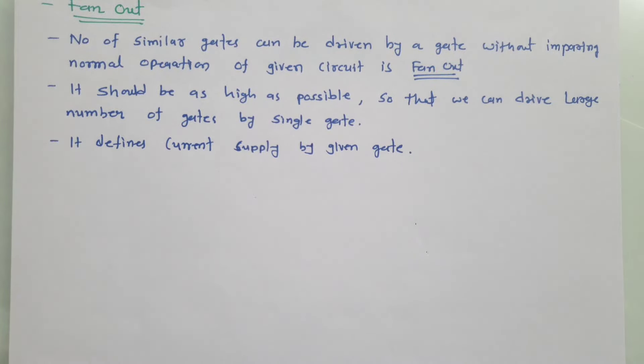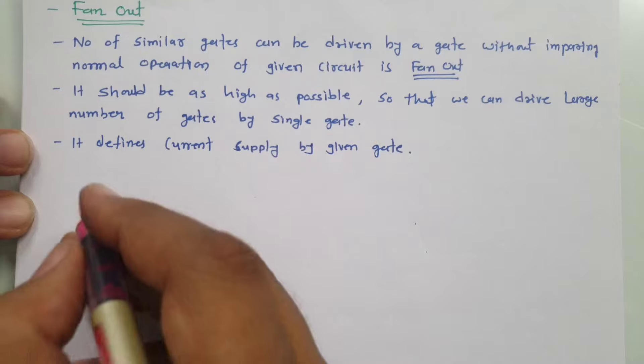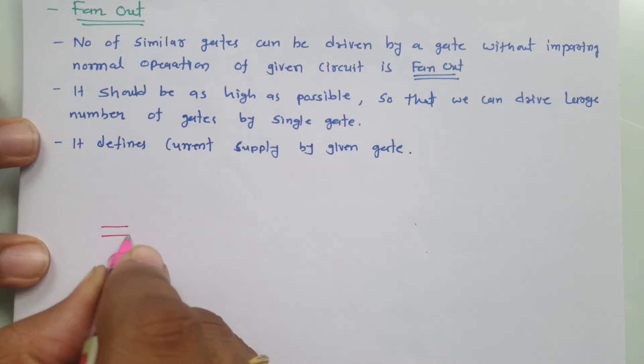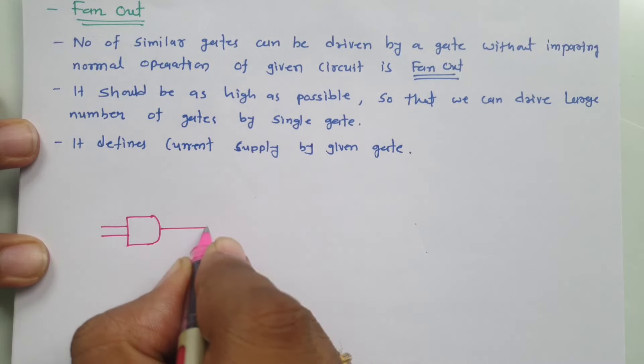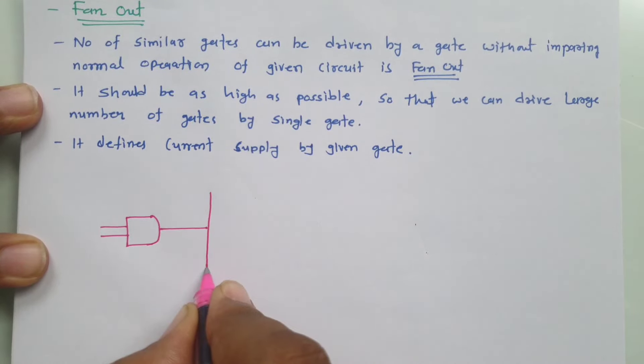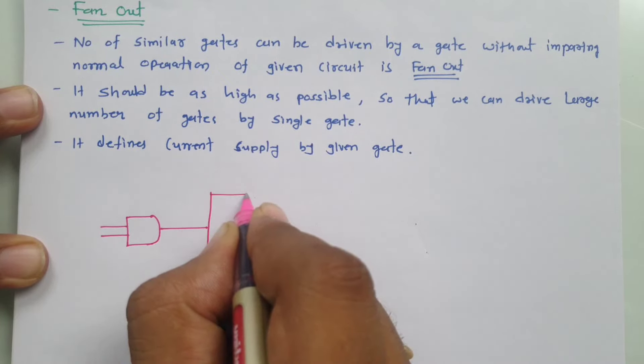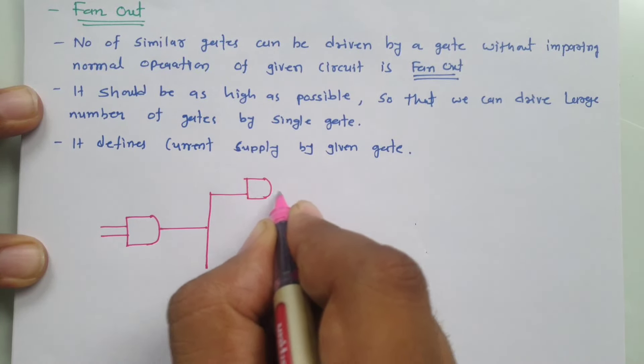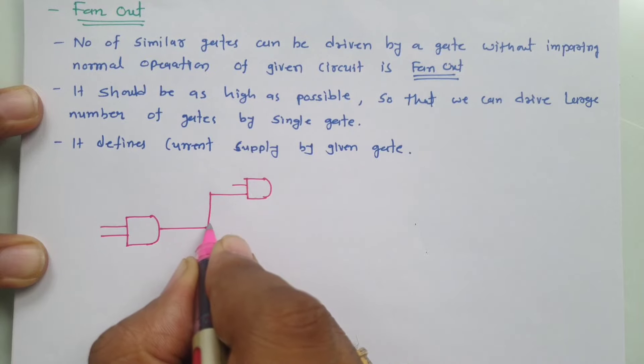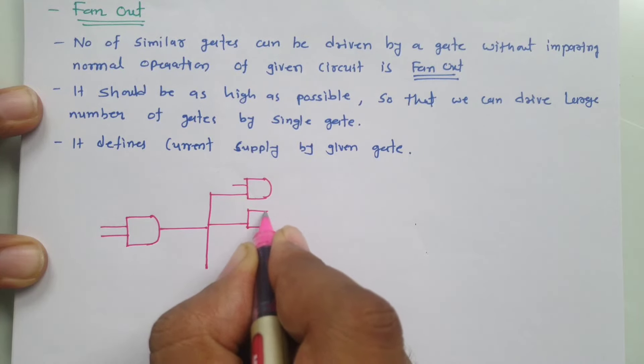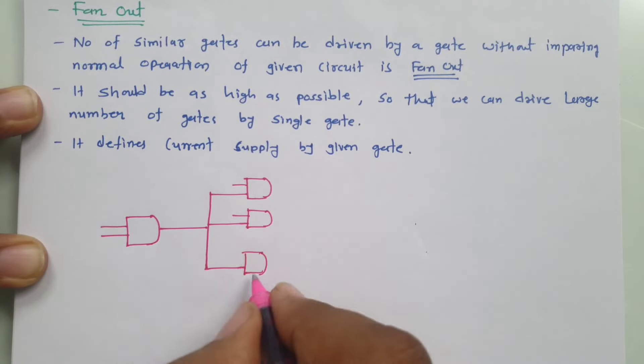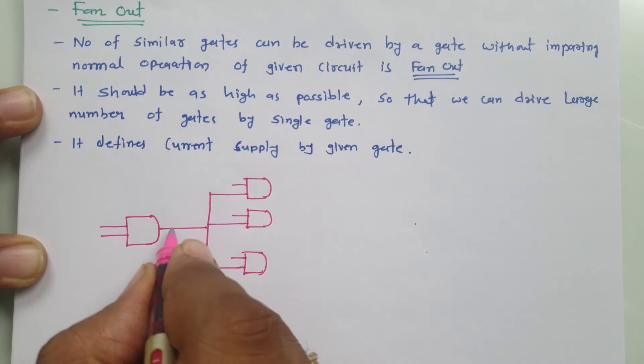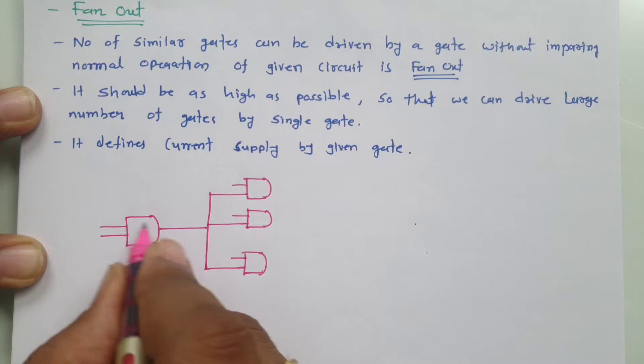Let us try to understand fan-out by one practical example. Let us say we have an AND gate over here and this AND gate provides output. Now, if I can provide such amount of current to many other similar AND gates, and if all of these AND gates are functioning properly, then number of similar gates driven by this single gate is referred as fan-out, where here the current is provided by this gate.